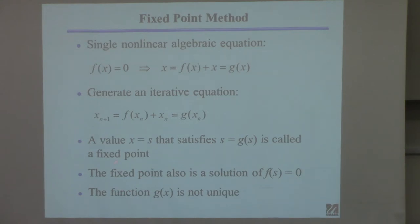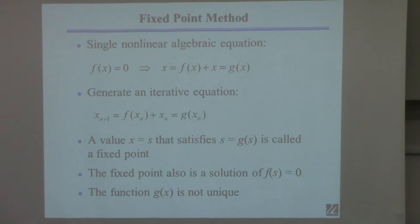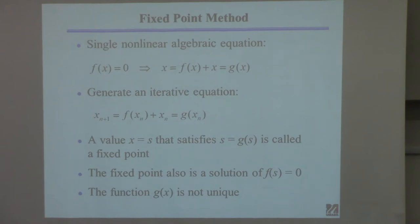A point where x equals s that satisfies this equation is called a fixed point. If I can find a value s that when I plug it in here I get s back, that's a fixed point. You see why it's called a fixed point — you plug it in, it doesn't change. A fixed point is also a solution of the original equation — finding s is equivalent to satisfying the original equation by construction.